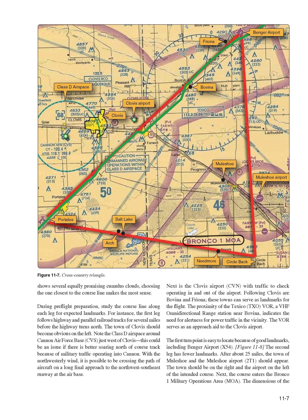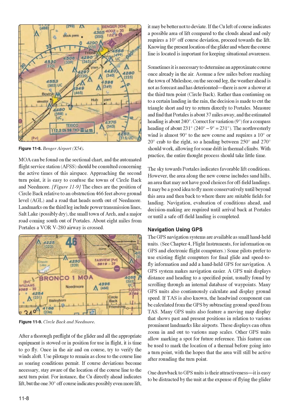The second leg has fewer landmarks. After about 25 miles, the town of Muleshoe and Muleshoe Airport (2T1) should appear—the town on the right and the airport on the left. The course then enters the Bronco-1 Military Operations Area (MOA); consult the AFSS concerning active times of this airspace. Approaching the second turnpoint, it is easy to confuse the towns of Circleback and Needmore. Clues are the position of Circleback relative to an obstruction 466 feet AGL and a road heading north out of Needmore.